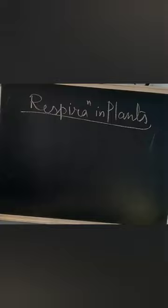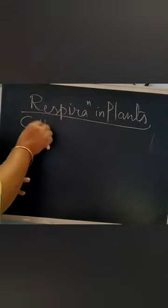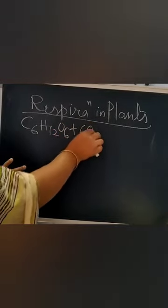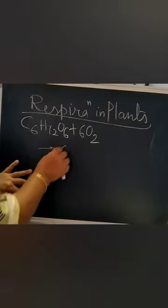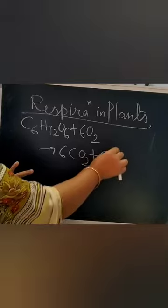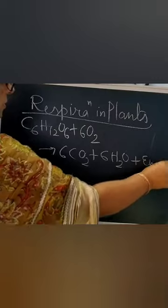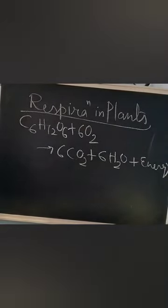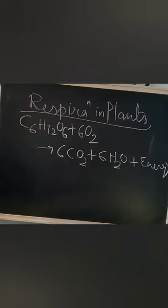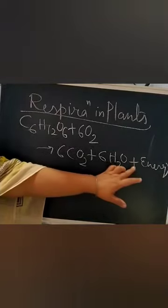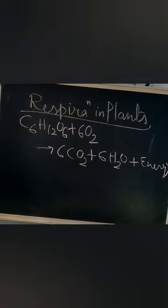Students, today we will discuss respiration in plants. Respiration is a chemical process that happens in the cell where food is oxidized. The respiration reaction is C6H12O6 plus six molecules of oxygen, giving six CO2 plus six water and energy. Respiration is a complex process in which respiratory substrates like sucrose, starch, glucose, other sugars, fats, organic acids, and proteins are broken down through oxidation, accompanied by the release of energy, water, and carbon dioxide.